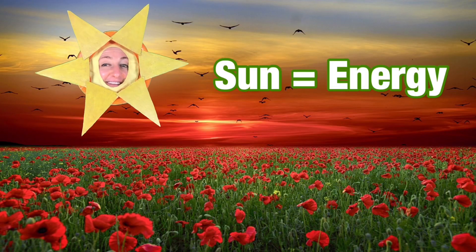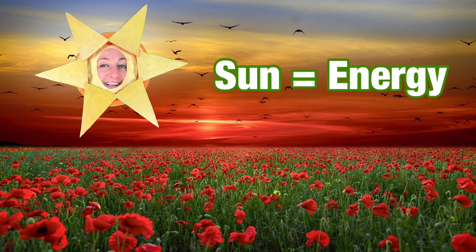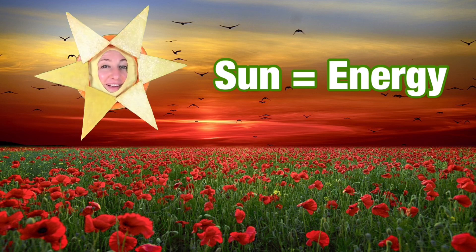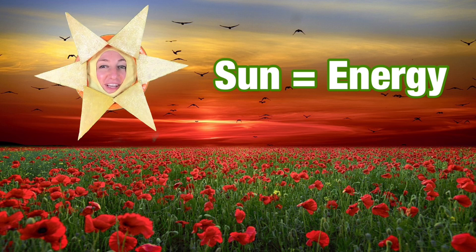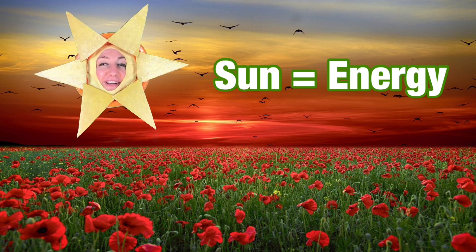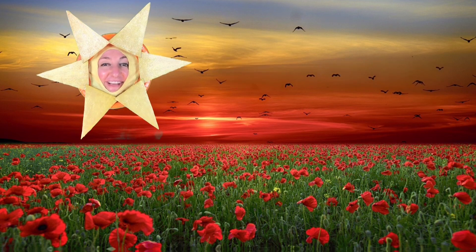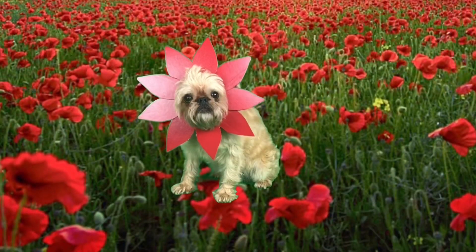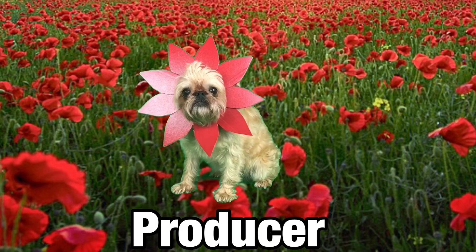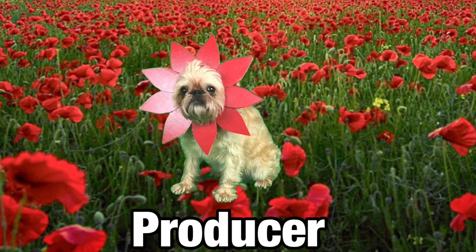I'm the Sun and I am the main source of energy for all life on Earth. I'm the very beginning of the food chain, and when I shine I help my friend the flowers to grow. Flowers are producers — living things that make their own food.